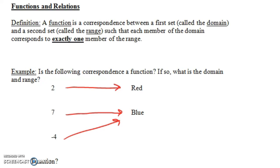So let's look at an example. Is the following correspondence a function? If so, what is the domain and range? Notice this is a correspondence: 2 corresponds to red, 7 corresponds to blue, and minus 4 corresponds to blue. So 2, 7, and minus 4 — that's the first set, that's the domain. The second set, red and blue, is the range.